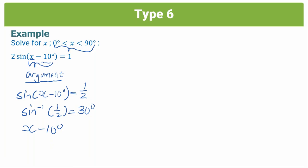So we'll set that equal to 30 degrees. And then it's just simple algebra. We take the 10 across, and we get an answer of x = 40 degrees. So this is how you solve a question with a complex argument.